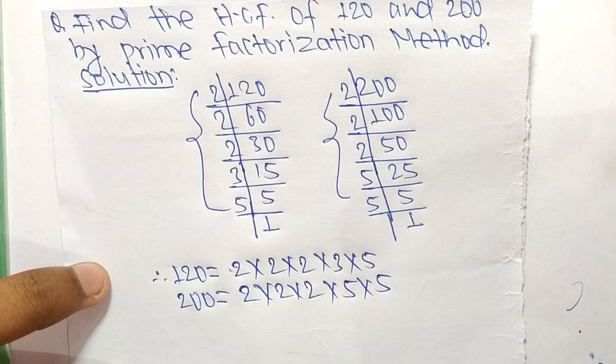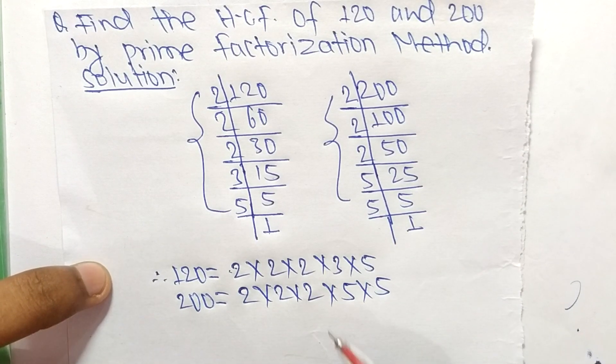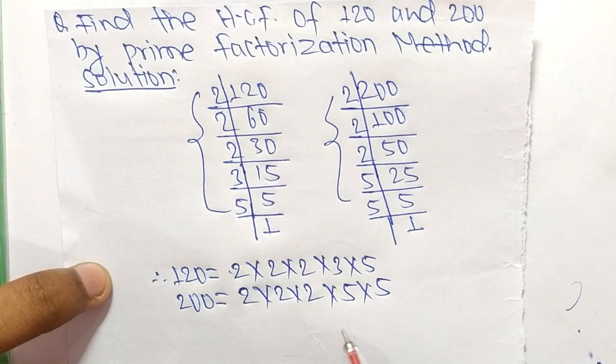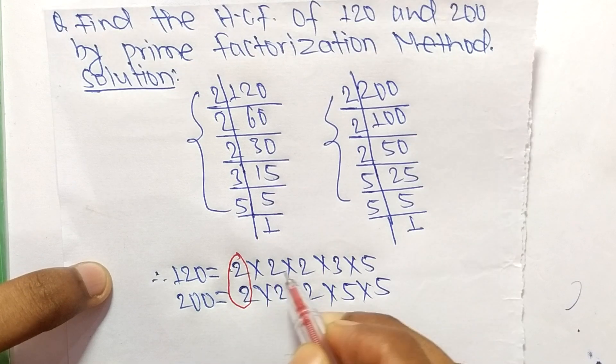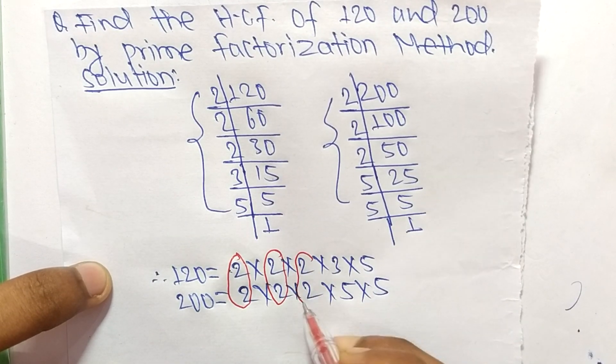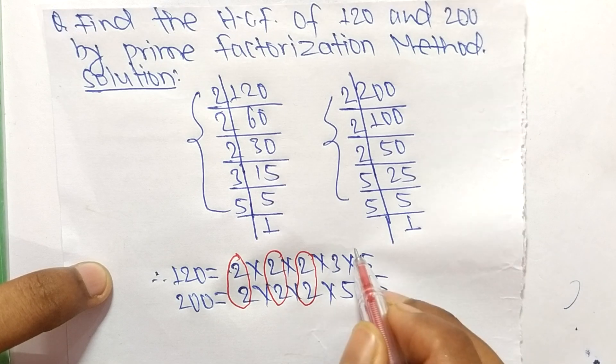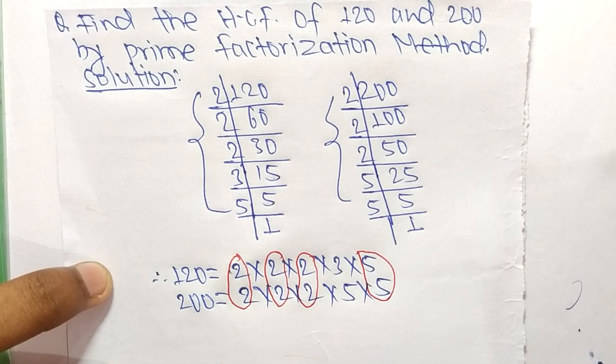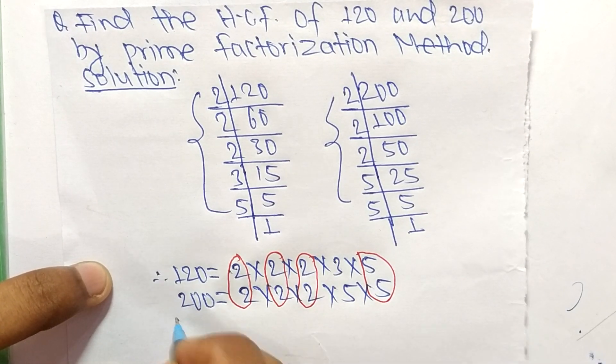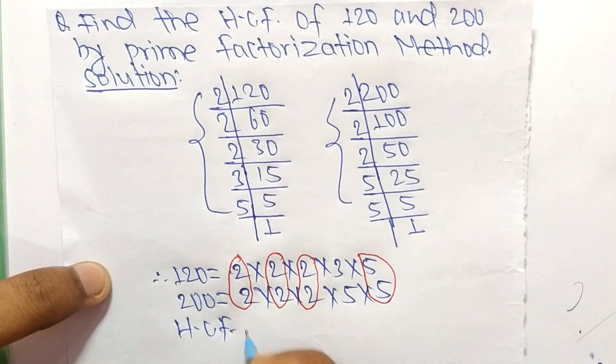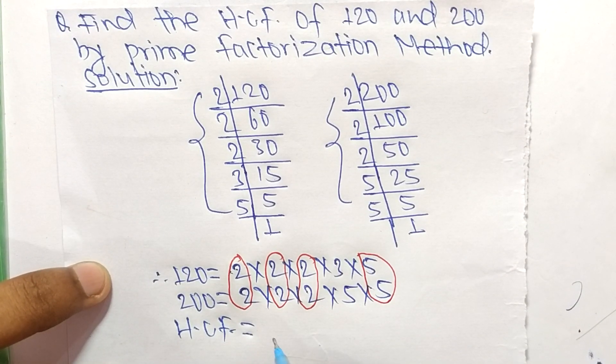Now we select the common factors in these prime factorizations. The common factors are 2, 2, 2, and 5.